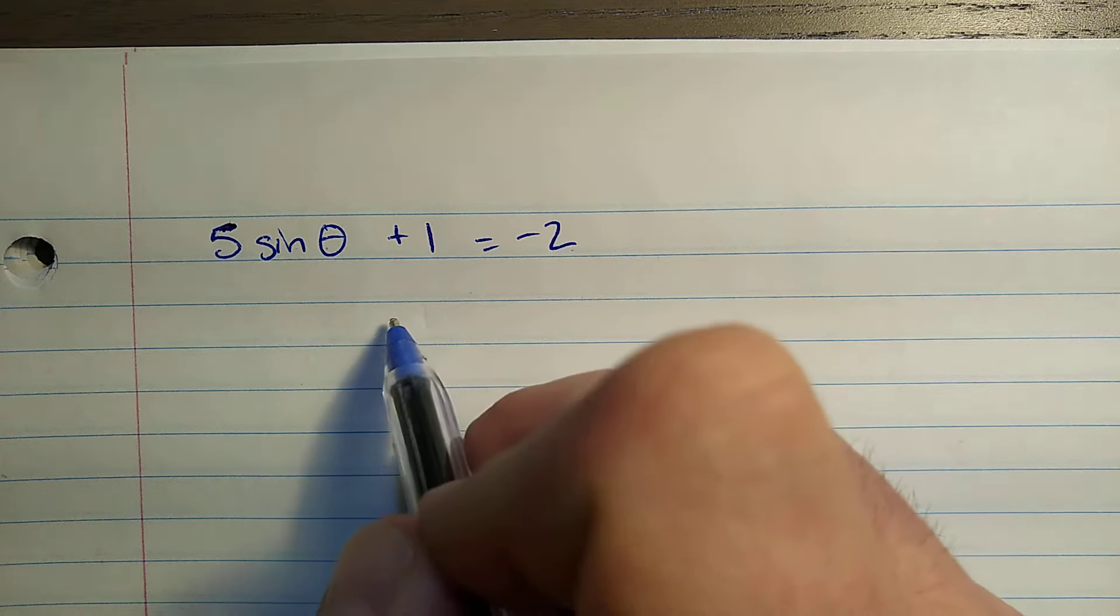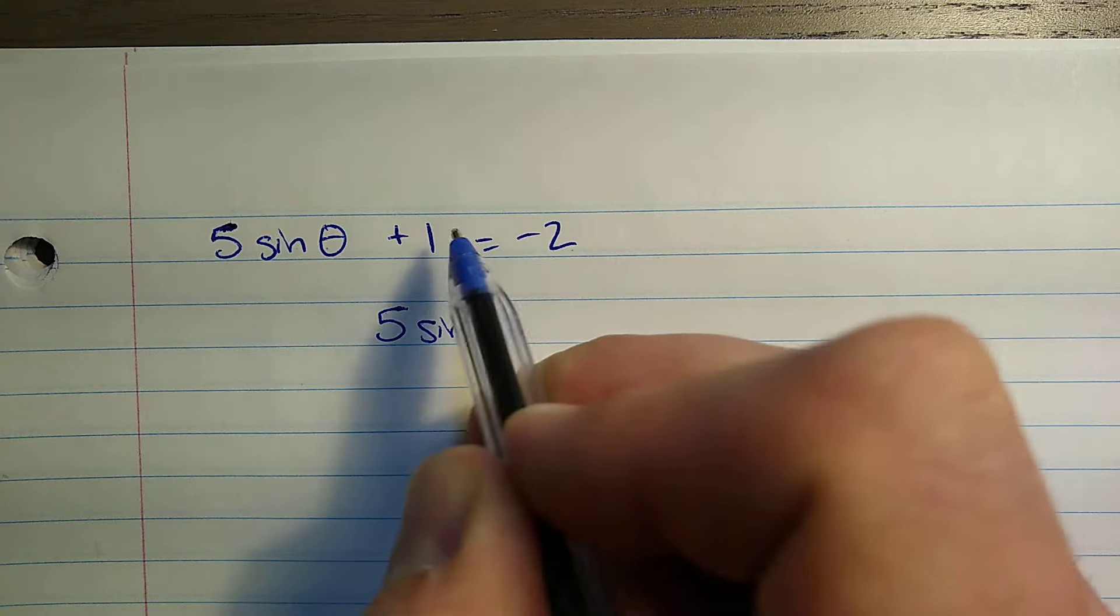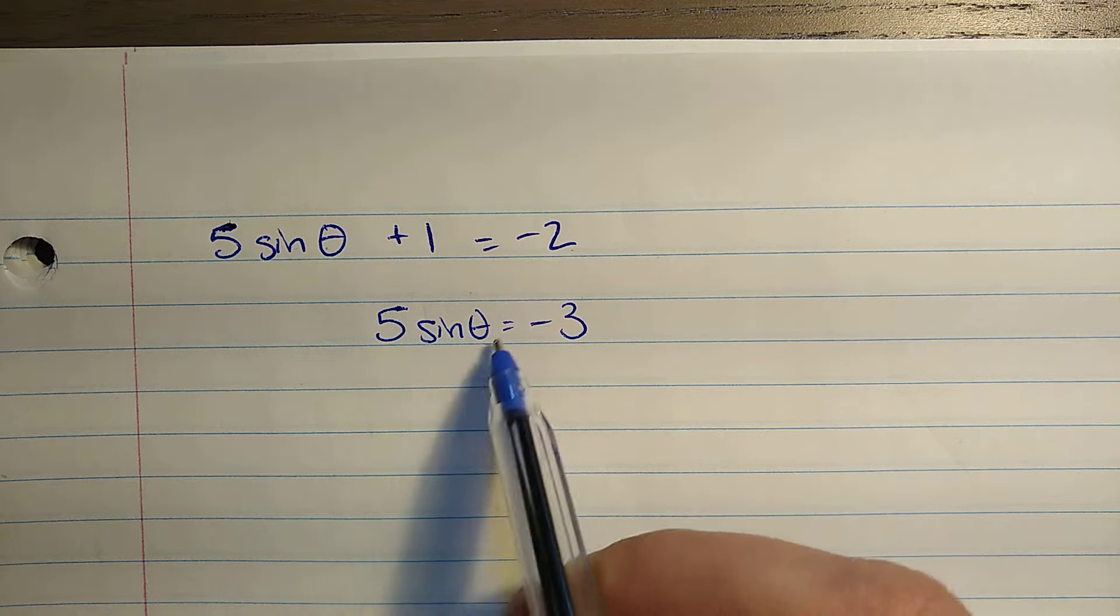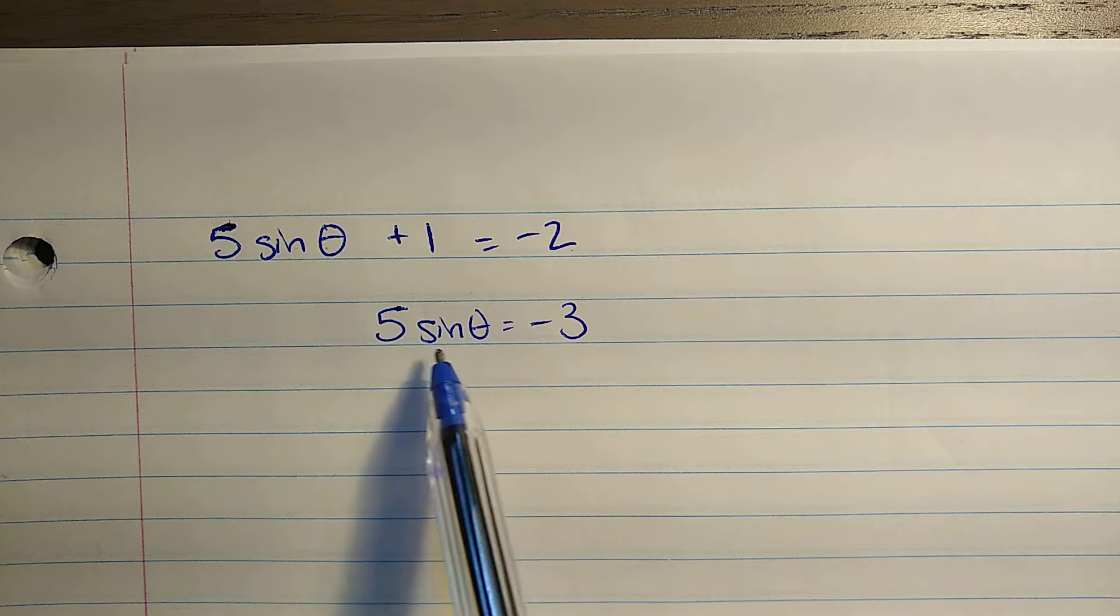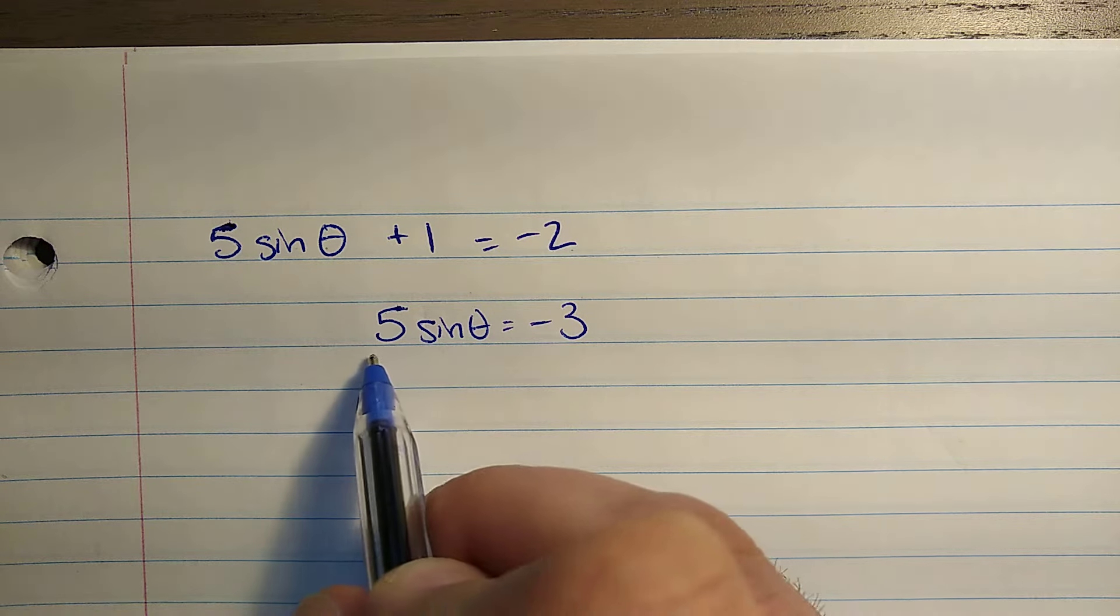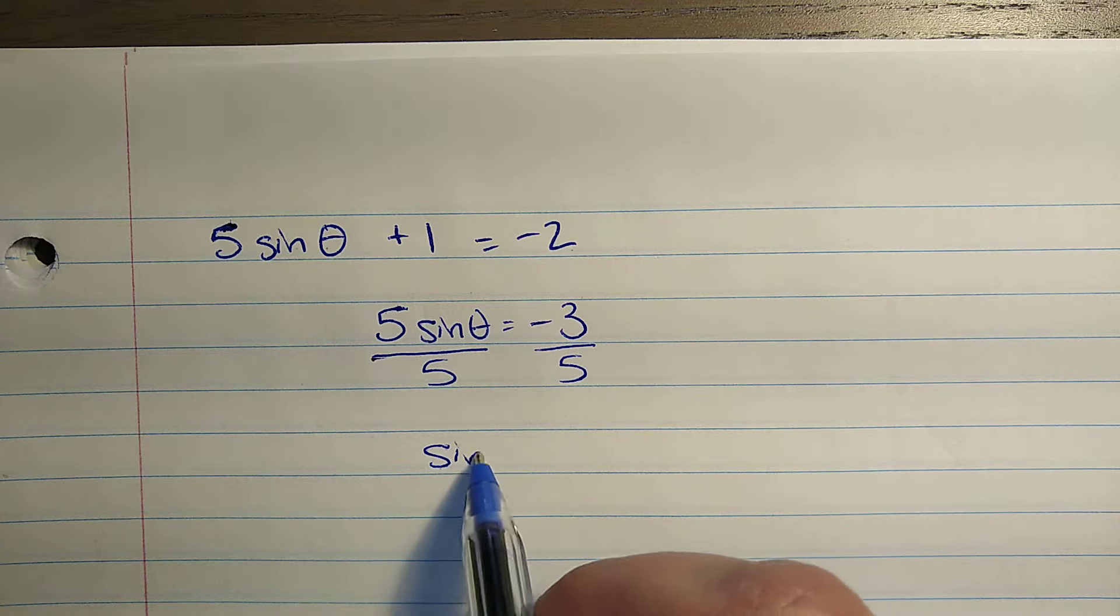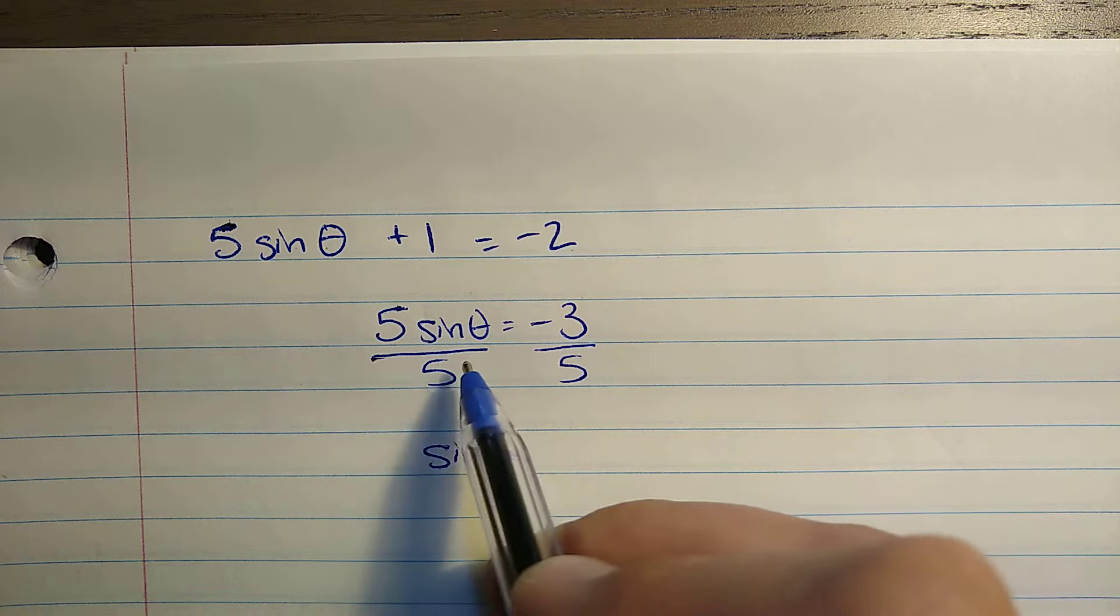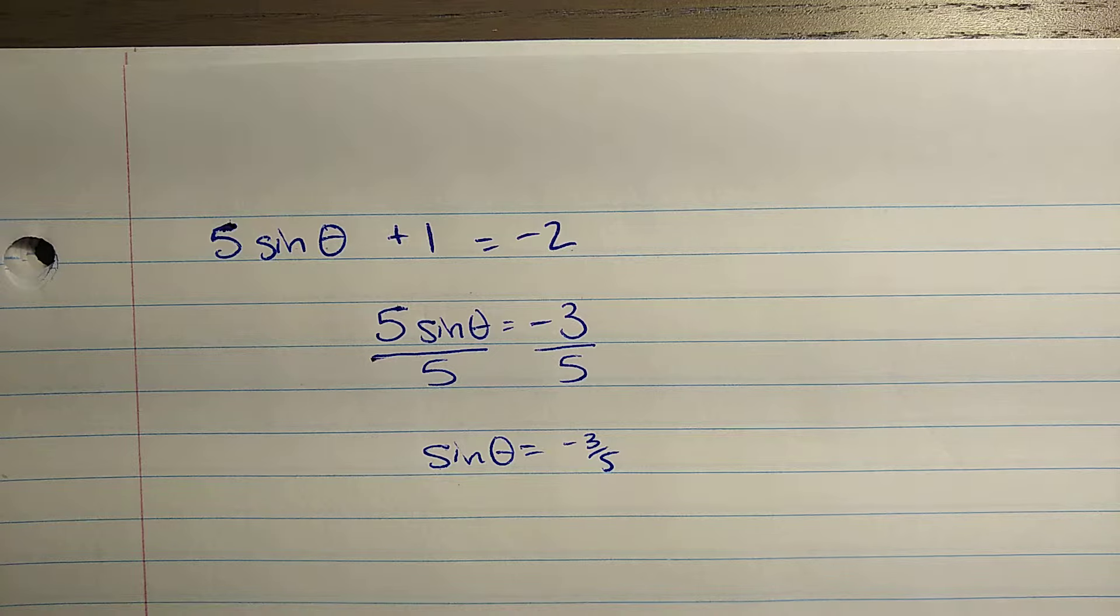I'm going to subtract one from both sides. I'll have 5 sin θ equals negative two minus one is negative three. Now sine of theta is one piece. It's a function, sort of like f of x. And so I can just divide both sides of this equation by five, and I'll be left with sine theta on the left-hand side on its own. This is five times sine theta divided by five.